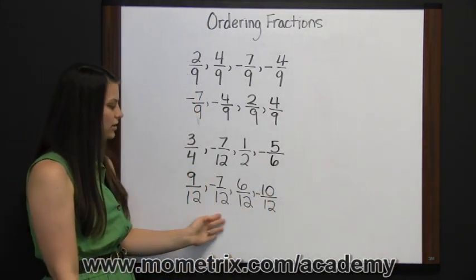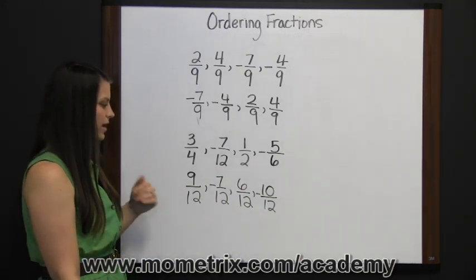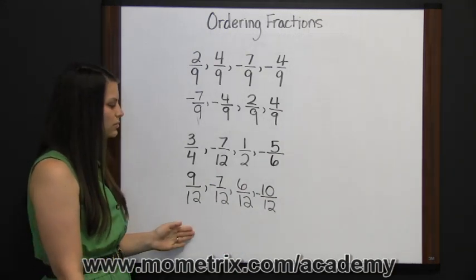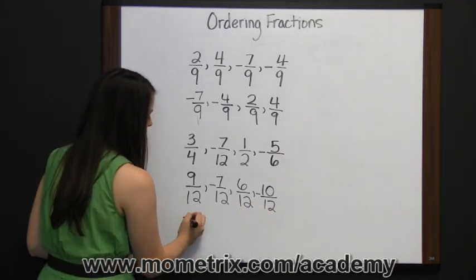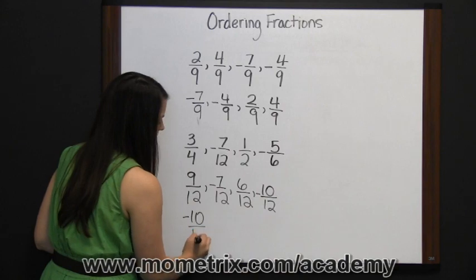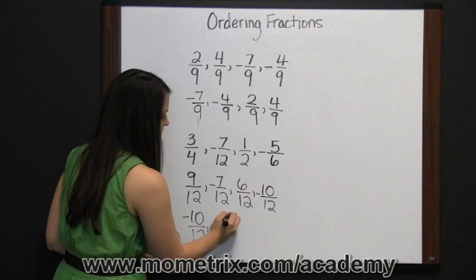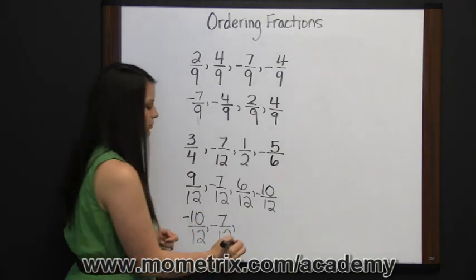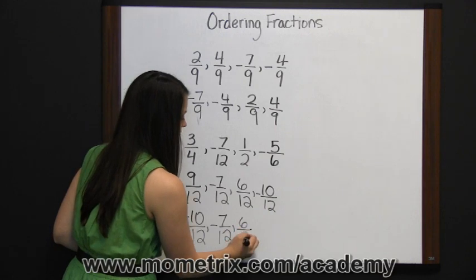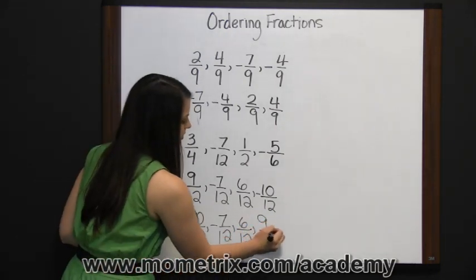Now we can order our fractions based on their numerators, from least to greatest, from left to right. Our smallest number is our biggest negative, which is negative ten twelfths. Then our next negative, negative seven twelfths, then six twelfths, and finally nine twelfths would be our largest number.